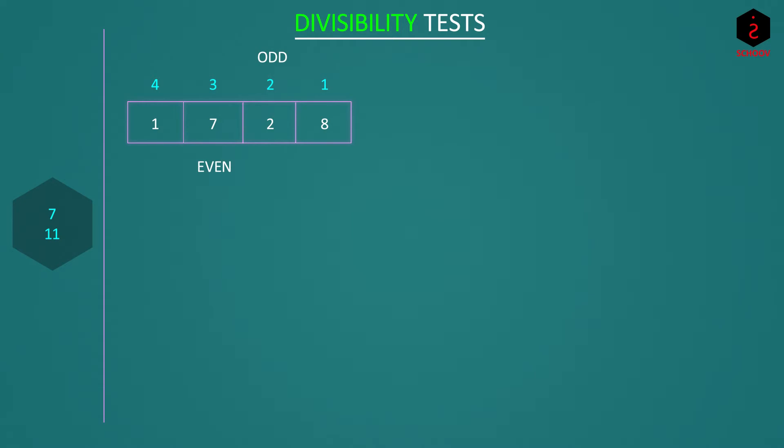Now let's take a greater number to understand the test. Take 1728342. For test of 7 we make blocks of 3 numbers starting from right. So first block contains 342, second is 728 and third is only 1. Now we add alternate blocks. So 342 plus 1 is 343 and the sum of the other block is 728. Then we find their difference. 728 minus 343 is 385.